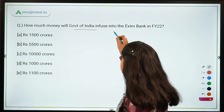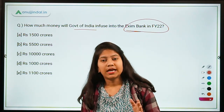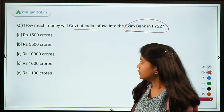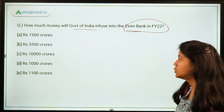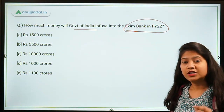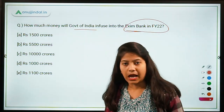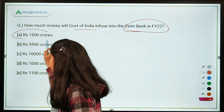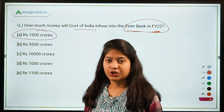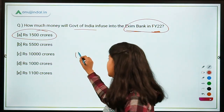Let's begin with the first question: How much money will the Government of India infuse into EXIM Bank — Export Import Bank of India — in FY 2022? The options are ₹1500 crore, ₹5500 crore, ₹10,000 crore, ₹1000 crore, or ₹1100 crore. The right answer is ₹1500 crores. Remember, the infusion in the current financial year is ₹1300 crores.